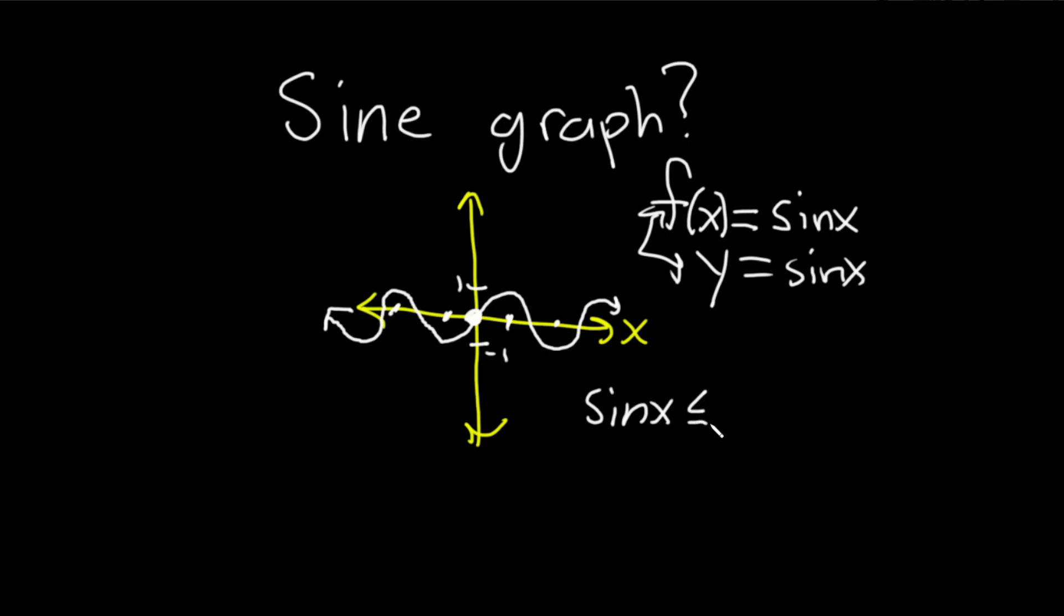Sine of x is less than or equal to 1. It's also greater than or equal to negative 1. So in particular, that means that the sine of x is between 1 and negative 1. And this basically means that the absolute value of sine x is less than or equal to 1.